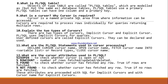What are the PL/SQL statements used in cursor processing? OPEN, FETCH, and CLOSE are the three statements majorly used in cursor processing. What are the cursor attributes used in PL/SQL? %ISOPEN, %ROWCOUNT, %FOUND, and %NOTFOUND — these four are the cursor attributes.